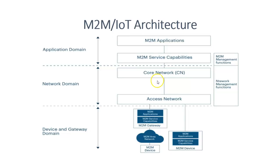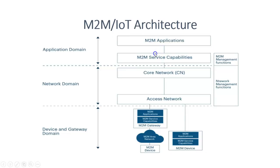Once data has been collected, it is transmitted to the network domain. The network domain ensures seamless communication between devices and applications through various wired or wireless technologies. The access network is the first layer of communication that connects devices or gateways to the core network. The core network is the backbone network responsible for data transport, authentication, and managing traffic between devices and applications. The application domain includes M2M applications and cloud-based platforms that process and analyze the collected data for decision making.